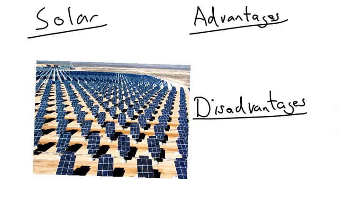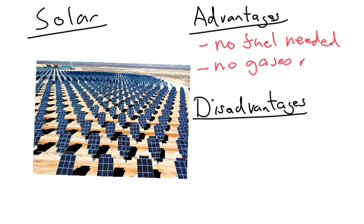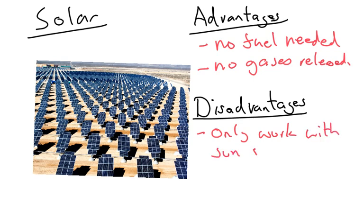Next up is solar. One of the advantages of solar is that there's no fuel needed and, like hydroelectricity, no harmful gases are released. The disadvantage is you have to be in a warm climate where there's a lot of sunshine. They only work with sunshine — in cloudy conditions they become less efficient, and they only work during the day.